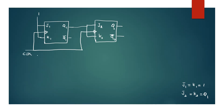Now let's write the final 2-bit counter design. J1 equals K1 equals 1, and J2 equals K2 equals Q1. This is how to design a 2-bit synchronous counter using JK flip-flops. Thank you.